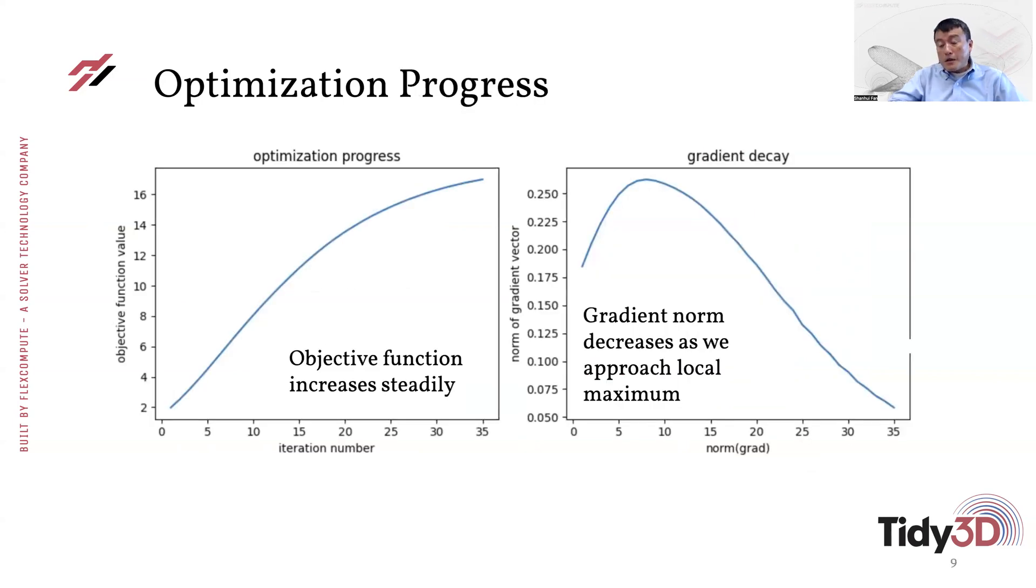So here are some additional plots about the optimization process. On the left here, we show the objective function as a function of iteration. So as we iterate, the objective function steadily improves. Now, if you recall, the objective function is the field intensity at the monitor point. So this gives indication that the device steadily improves its performance in terms of focusing. On the right, we show the norm of the gradient as a function of iteration step. So as we further progress in the optimization, in the iteration, the gradient gradually decays.